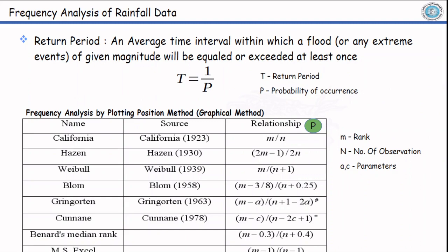As defined earlier, return period is an average time interval within which a flood of a given magnitude, or any hydrological extreme event of given magnitude, will be equaled or exceeded at least once.